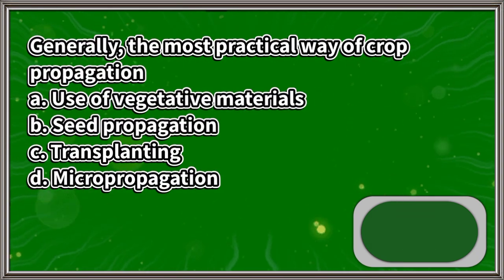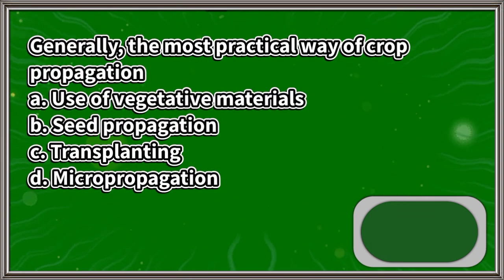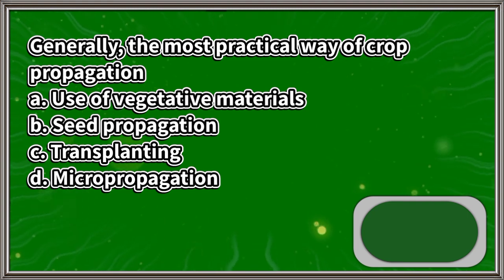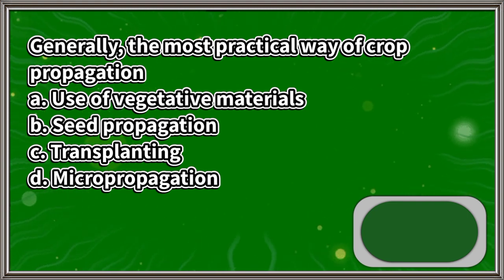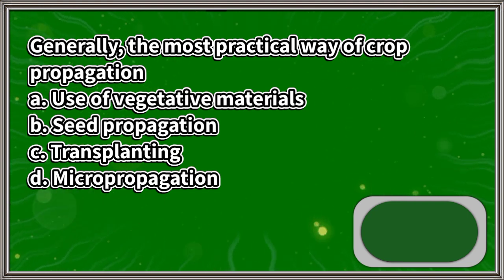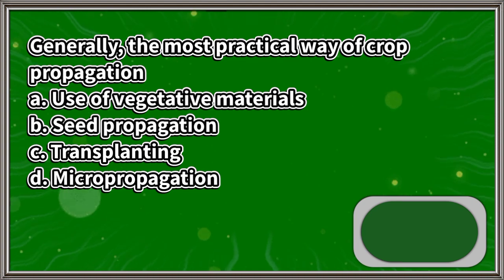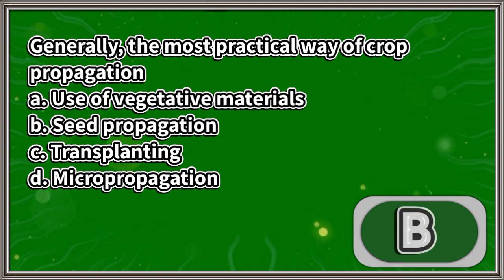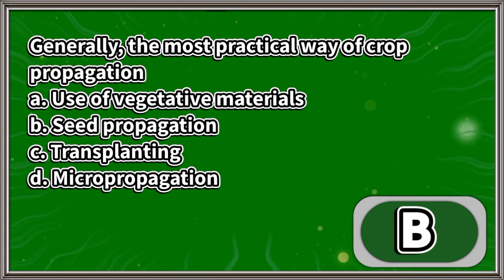Generally, the most practical way of crop propagation: A. Use of vegetative materials, B. Seed propagation, C. Transplanting, D. Micropropagation. The answer is letter B.